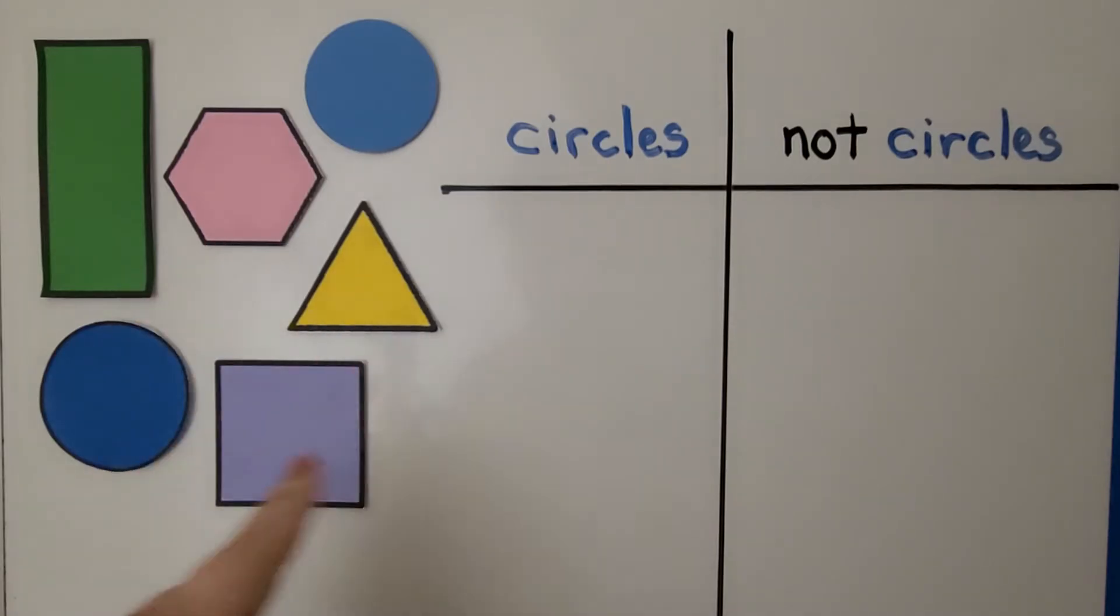Here we have some shapes. We can sort these shapes by circles and not circles. We can put the circles on this side that says circles, and the ones that are not circles we can put on this side that says not circles.